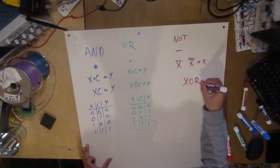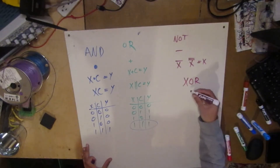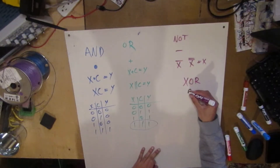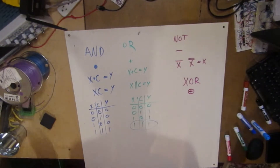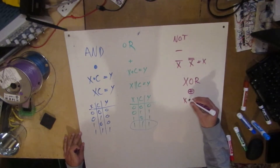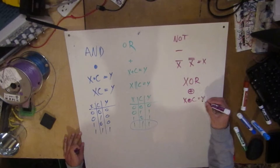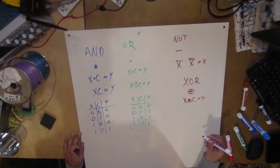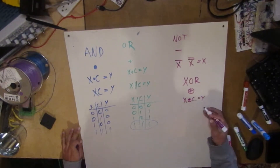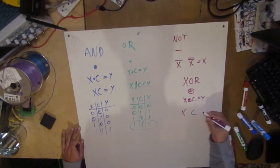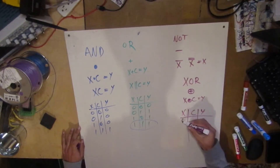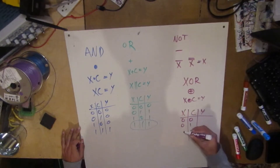Let's go do XOR. XOR is given the symbol plus with a circle around it, because it's kind of related to the OR — we exclusify it, like exclusive OR. So we put the circle around it. And you have x exclusive OR with c equals y. There might be other ways, like some weird dash things, but I like to use this because the dash things can get mixed up. So I just use symbols that stand out.